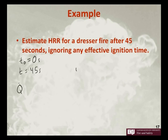Our heat release rate is going to be equal to alpha times T minus T0 squared. So we need to choose an alpha. We have a dresser fire.